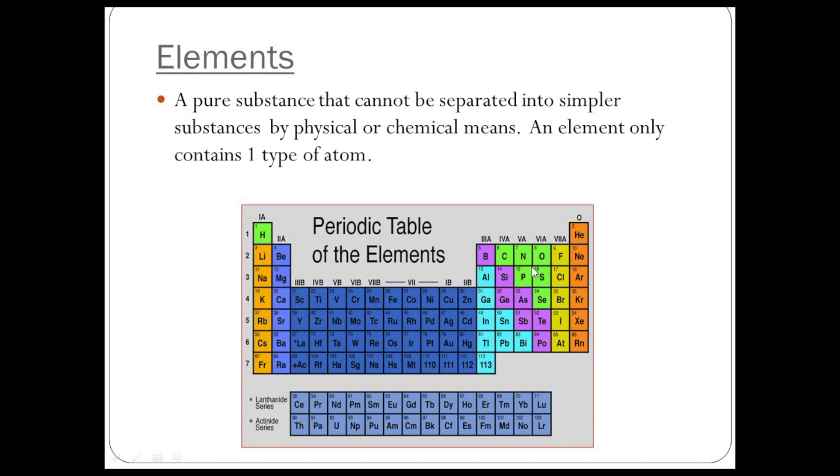If I've got a block of rubidium, I've only got rubidium atoms in there. If I've got a cylinder of oxygen, I've only got oxygen atoms in there. They cannot be separated into simpler substances by physical or chemical means. We'll go into that later. An element only contains one type of atom, so we've only got nitrogen atoms in nitrogen, chlorine atoms in chlorine.